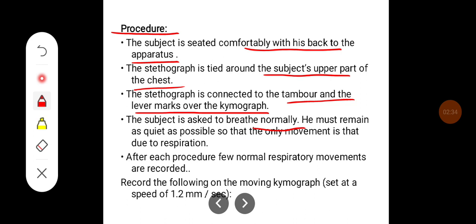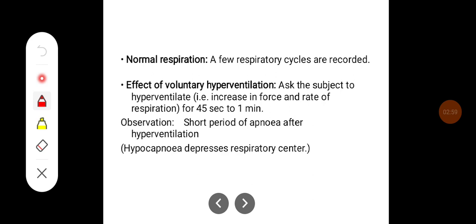After each procedure, a few normal respiratory movements are recorded. The following are recorded on the moving kymograph at a speed of 1.2 millimeters per second. First, the recording of normal respiration: a few respiratory cycles are recorded.